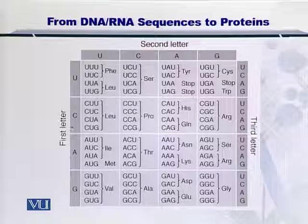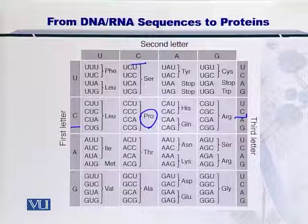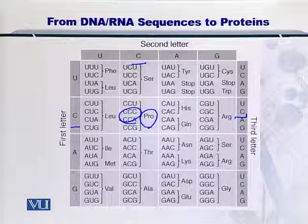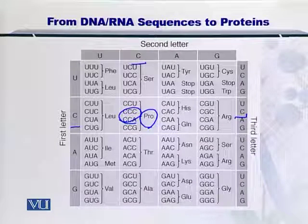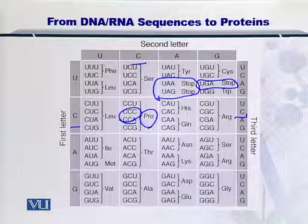Let's take a look. If you have the first nucleotide as C, the second nucleotide as C, and the third nucleotide as C, then you will actually encode for proline — you can read the sequence C, C, C, so it will encode for proline. Similarly, if you have any combination generated from these four nucleotides, you can look up this table and find which amino acid is encoded. Please also note that there are combinations of nucleotides given here that actually encode for the stop codon.